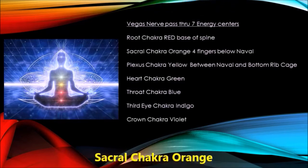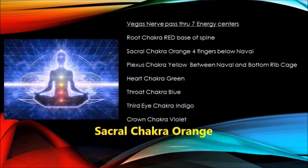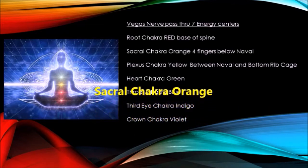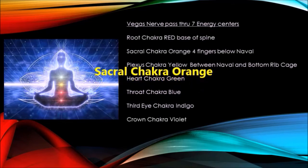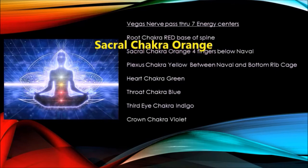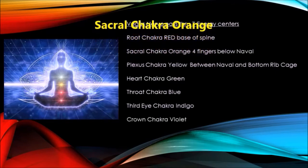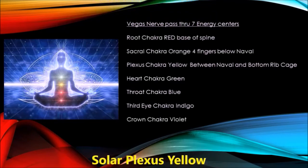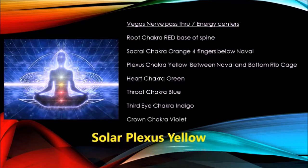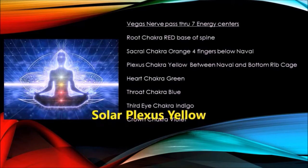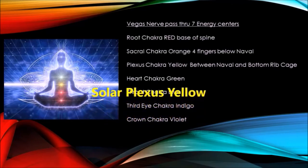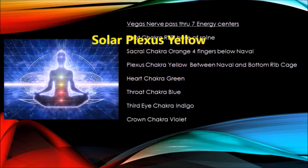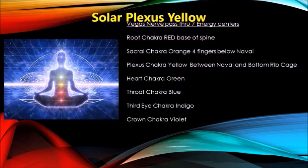The solar plexus chakra is yellow in color, located in your stomach around two to three inches above your belly button and below your rib cage. It is called the warrior chakra because it is the most powerful supporting chakra of bravery and boundary setting. The heart chakra is green, located in the chest and around the heart space. The Sanskrit term for the heart chakra translates to the state of being unheard, and when you experience feelings of love, compassion, and kindness, it is this energy center that you are connecting to.